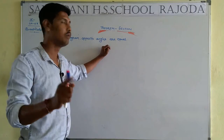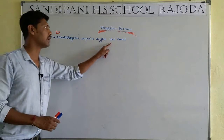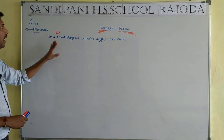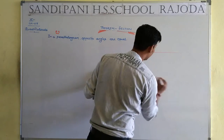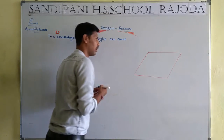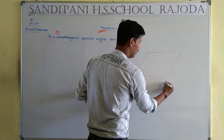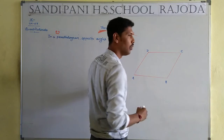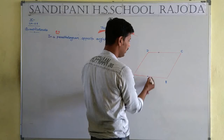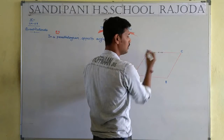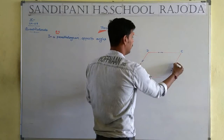Now we are taking the next theorem — Theorem Number 5: In a parallelogram, opposite angles are equal. We have to prove this. First, what is the meaning of a parallelogram? A parallelogram is a quadrilateral ABCD in which opposite sides are equal and parallel — AB equal to CD, AB parallel to CD, AD parallel to BC, and AD equal to BC.